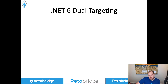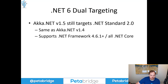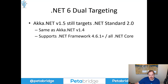Next, we offer .NET 6 dual targeting in Aka.NET. Aka.NET still targets .NET Standard 2.0 just like Aka.NET 1.4 does today, and .NET Standard 2.0 supports all versions of .NET from .NET Framework 4.6.1 and onwards. That framework is pretty old — 4.6.1 originally shipped around 2012-2014. But we still support it, so you don't need to worry about Aka.NET 1.5 undermining the platform your application currently runs on.